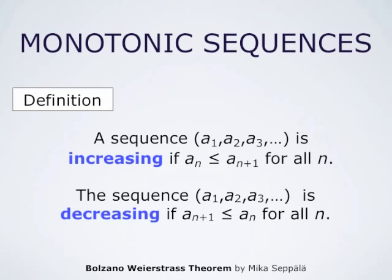Likewise, the sequence a1, a2, a3 and so forth is decreasing if a_{n+1} is at most a_n for all n. And we say that the sequence is strictly decreasing if we have strict inequality between a_{n+1} and a_n.